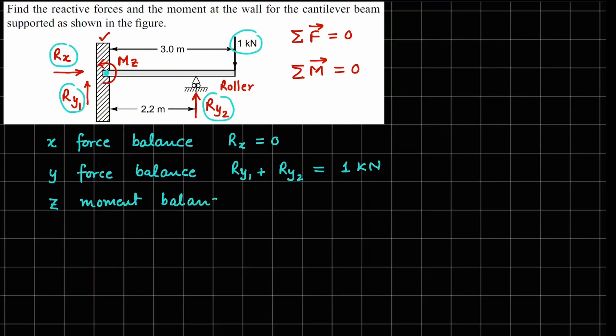Now your Mz moment, since it is in the counterclockwise direction, we will take this as negative z. Now both Rx and Ry1, since they are passing through that point, they will not contribute to the moment.